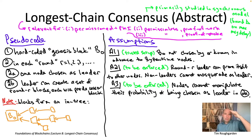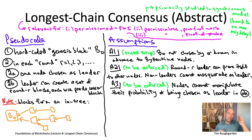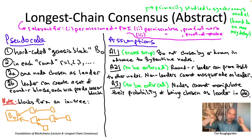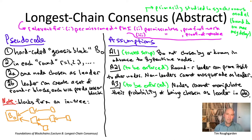When you first fire up this protocol, all there is is B-naught — the genesis block. As the protocol continues, rounds keep passing, leaders create new blocks, and you get this tree growing from left to right, with all newly created blocks pointing back to whichever block they're claiming as a predecessor.